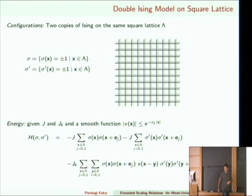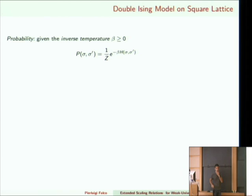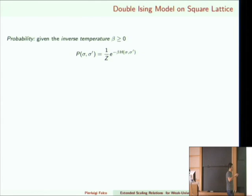Given the energy, you want to assign a probability to each configuration. The probability of a configuration is just e to the minus beta times the energy — beta is a parameter with the meaning of inverse temperature — and the factor 1/Z normalizes the probability so that when you sum over all sigma and sigma prime you get one. Essentially, this formula tells you that a configuration with high energy is exponentially unlikely.